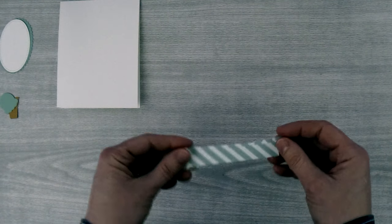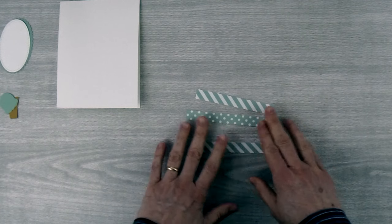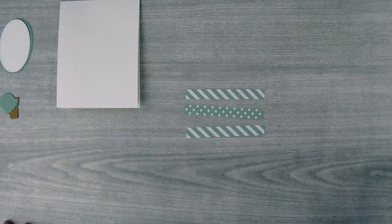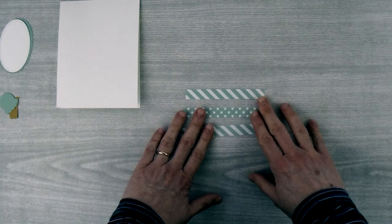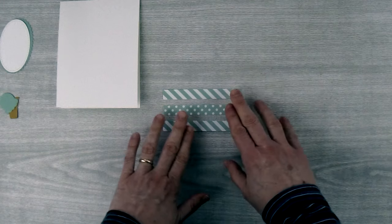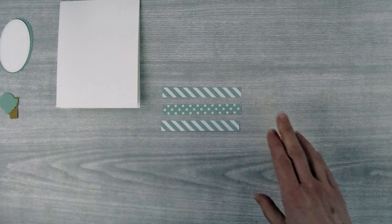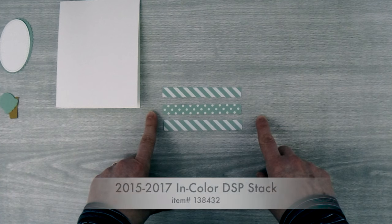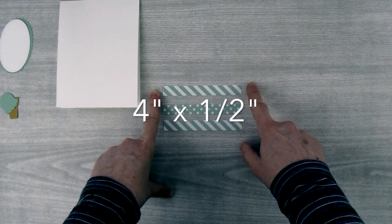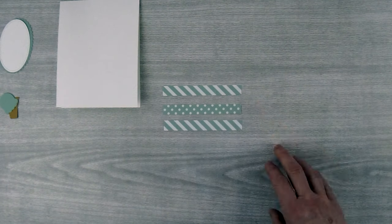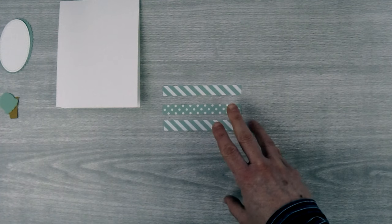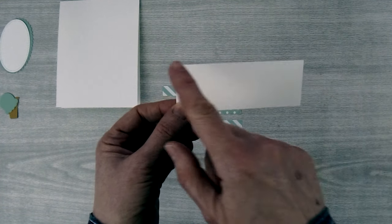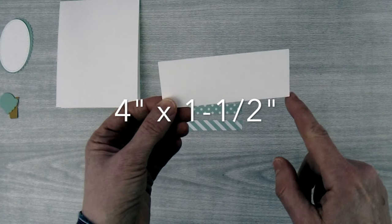So you know how sometimes you'll end up with little tiny scraps of designer series paper left over and sometimes you're not really sure what to do with them. I'm going to combine some of these scraps together to make a layer to go behind my oval. So these are pieces from the 2015-2017 in color designer series paper stock and they are each four inches by half an inch. To help align them on the card base I've taken a plain piece of Whisper White cardstock and I've cut it to four inches by one and a half inches. This is going to make it a lot easier for me to line things up on the card base.